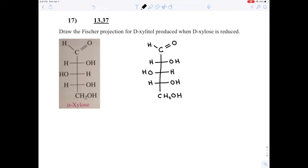Chapter 13, question 17, is asking you to draw the Fischer projection for D-xylitol produced when D-xylose is reduced.